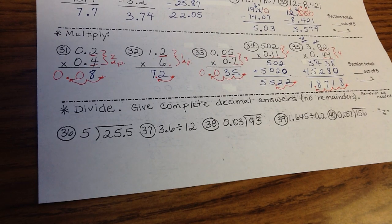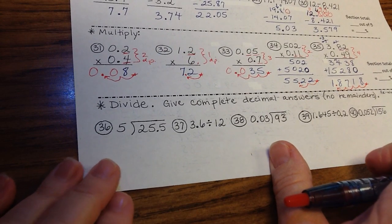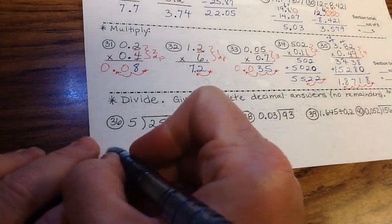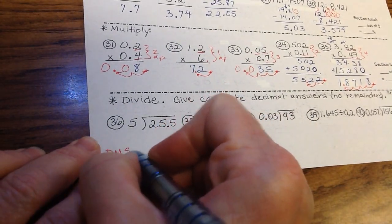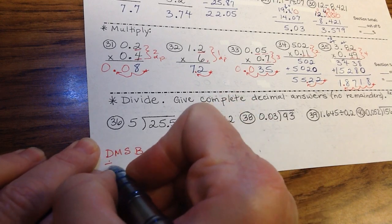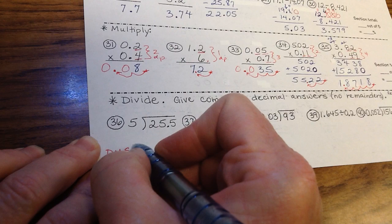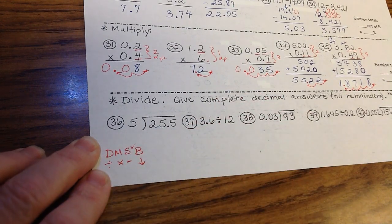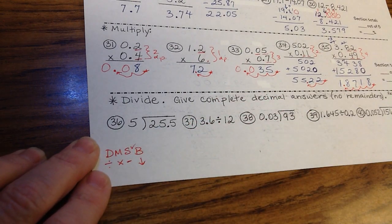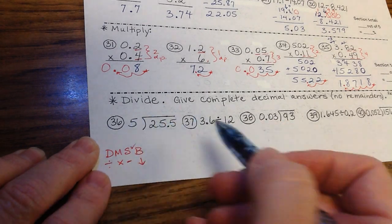So we're going to start off by remembering our mnemonic. We're going to think of dad, mom, sister, brother. Divide, multiply, subtract, bring down. Before you subtract, before you're done with that step, you have to check to make sure that the difference is less than the divisor. The number that you have after you subtract is less than the number you were trying to divide by.